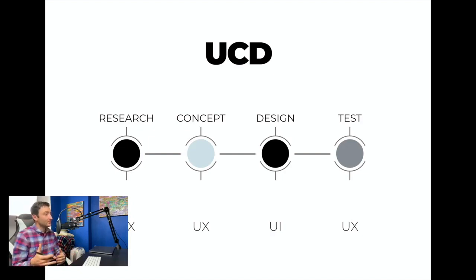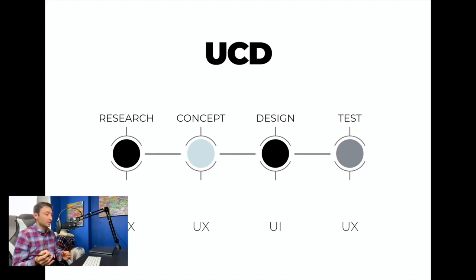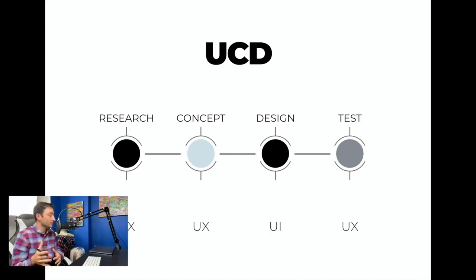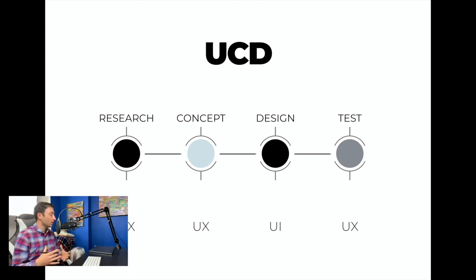Once the concept phase is done, you can hand it over to the detailed design phase, which is where UI comes in. UI could be done by a UX designer — product design is a new term combining UX and UI — or you can give it to someone more graphically design focused. They'll take the wireframe and apply the look and feel of the company. A lot of big companies have a design language — a set of fonts, colors, and buttons.